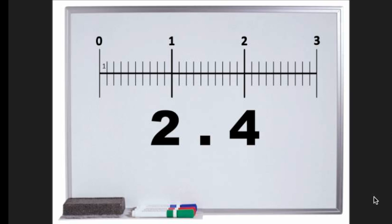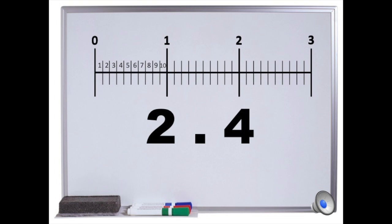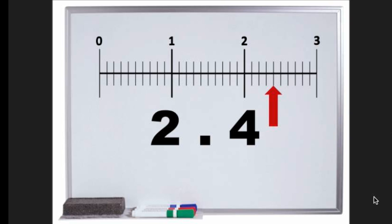We can see this more accurately when we add in the tenths. In between every whole number, there are 10 tenths. If we put an arrow showing us where 2.4 goes, this is where it would be pointing. It is 4 tenths more than 2.